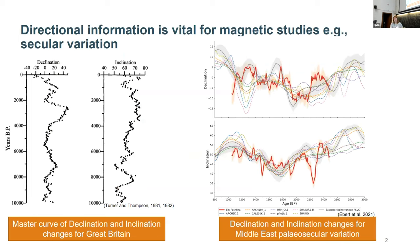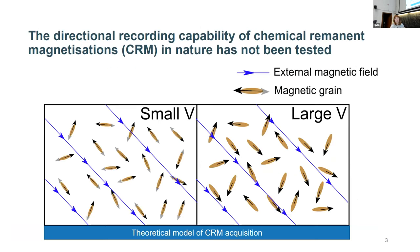A quick reminder about why we care so much about direction information: the main application of CRMs is in paleosecular variation studies, looking at how the Earth's geomagnetic field has varied without flipping. A lot of studies look at lake sediments because they have very high accumulation rates, giving a high-resolution variation study. Many lake and sea sediments actually record CRMs. This example on the right is a recent study using Dead Sea sediments to improve the area separation modeling in the Middle East, using a CRM carried by greigite. This project aims to ground-truth that we're using CRMs reliably for these directional studies.